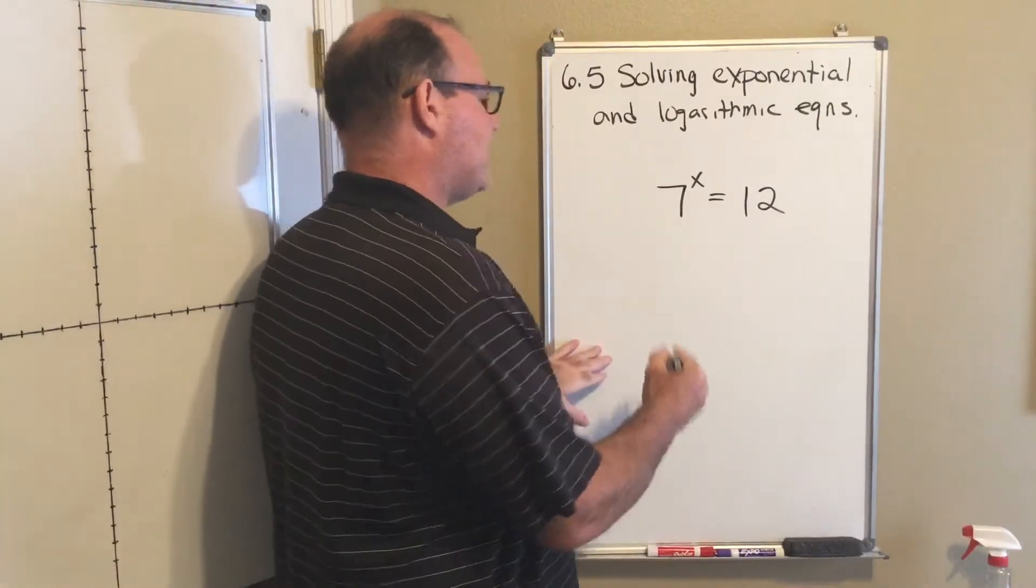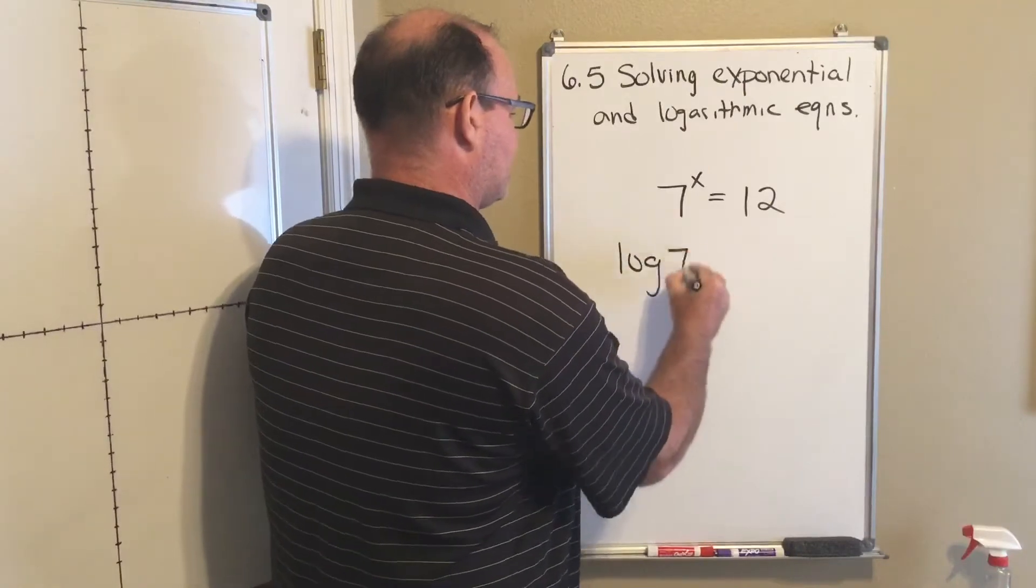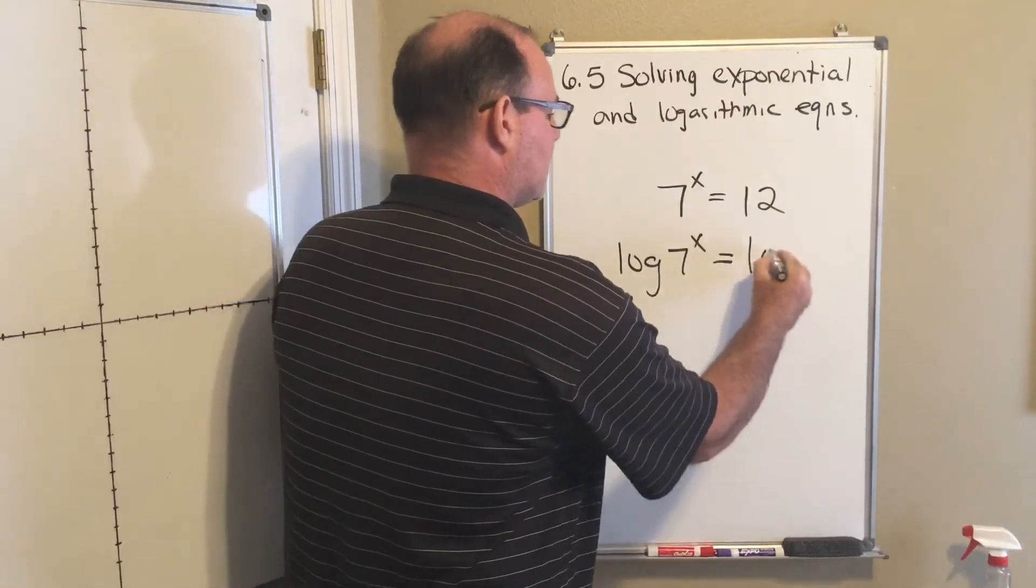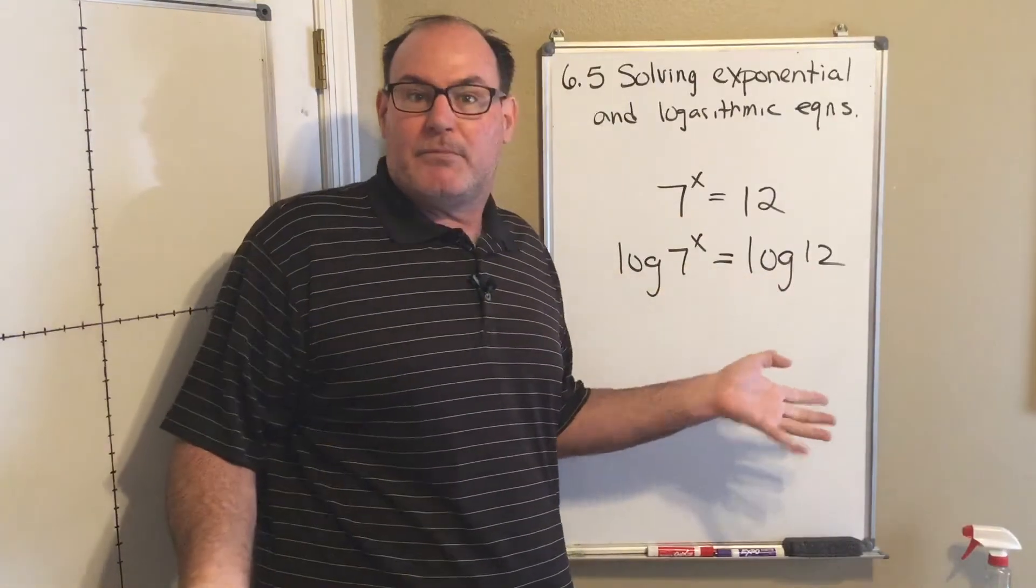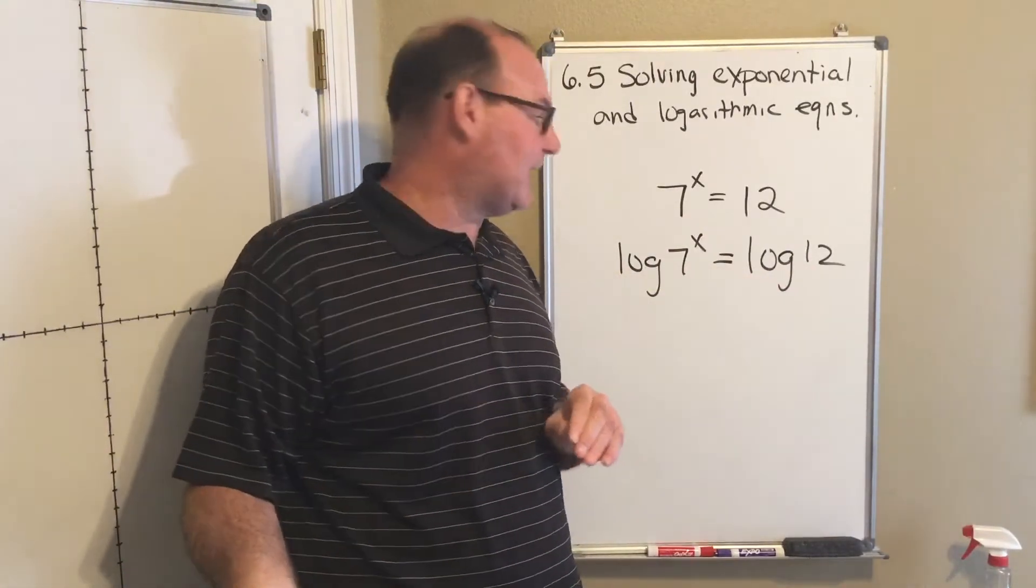All right, here we go. So I'm going to take the log of both sides. So I've got the log of 7 to the x power is equal to the log of 12. Now here's the nice thing. Log of 12, that's just a number. There's a value. And we'll be able to use our calculator to get that.